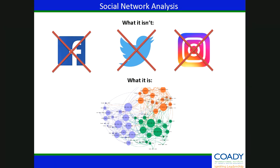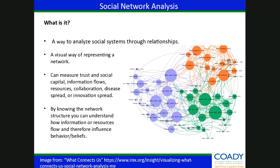Social network analysis lets us get to that information systematically and rigorously, going beyond hunches and intuitions. It lets us map the flow of knowledge, strength of relationships, and social capital within a network. And it doesn't necessarily have to be done on a computer — it can be done like asset mapping or other participatory tools, though software can help visualize and make connections clearer. It's really about relationships between people or things and how they interact in a social system. Analyzing and visualizing these networks can reveal critical insights for understanding relationships between organizations, supply chains, social movements, or individuals. It's a versatile tool which can be used throughout the program cycle to measure trust and social capital, information flows, resources, collaboration, and disease spread.